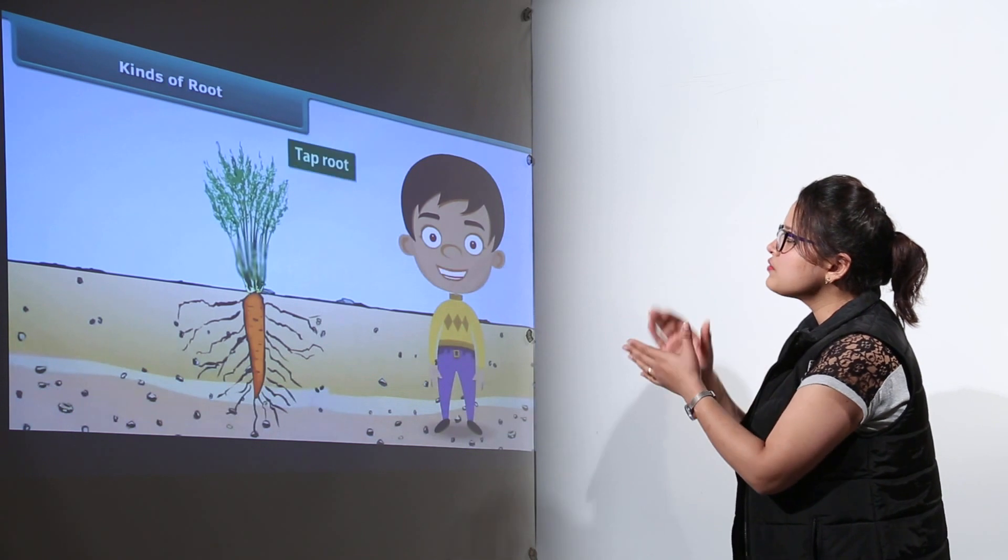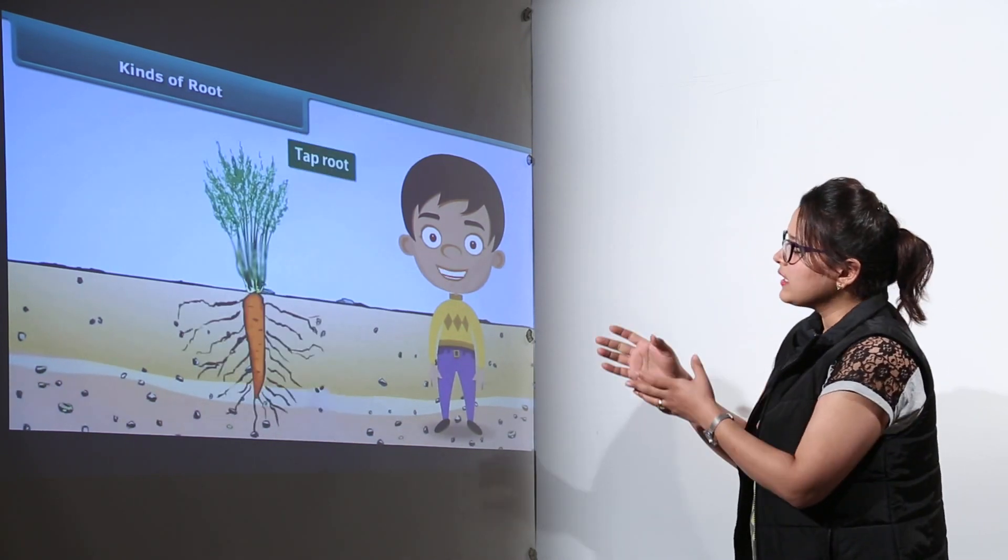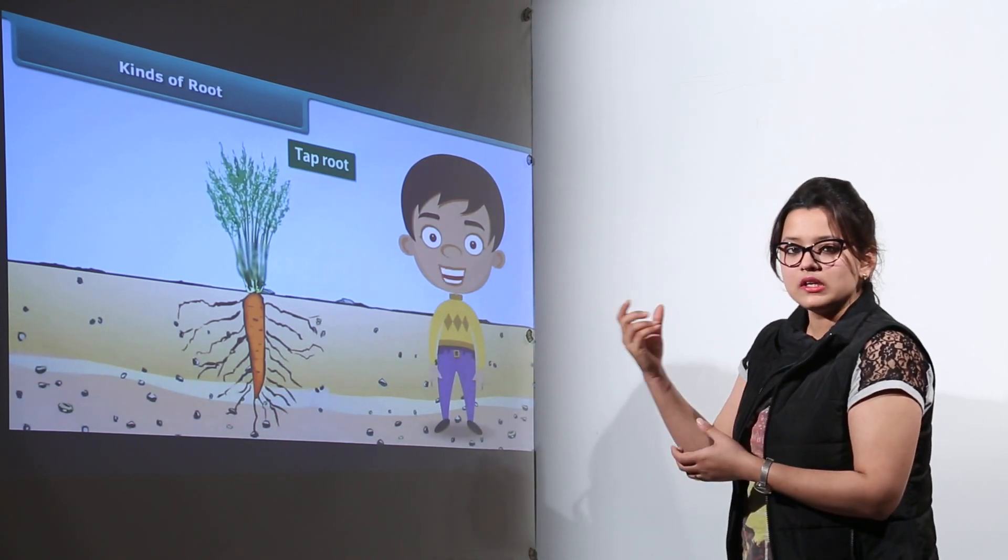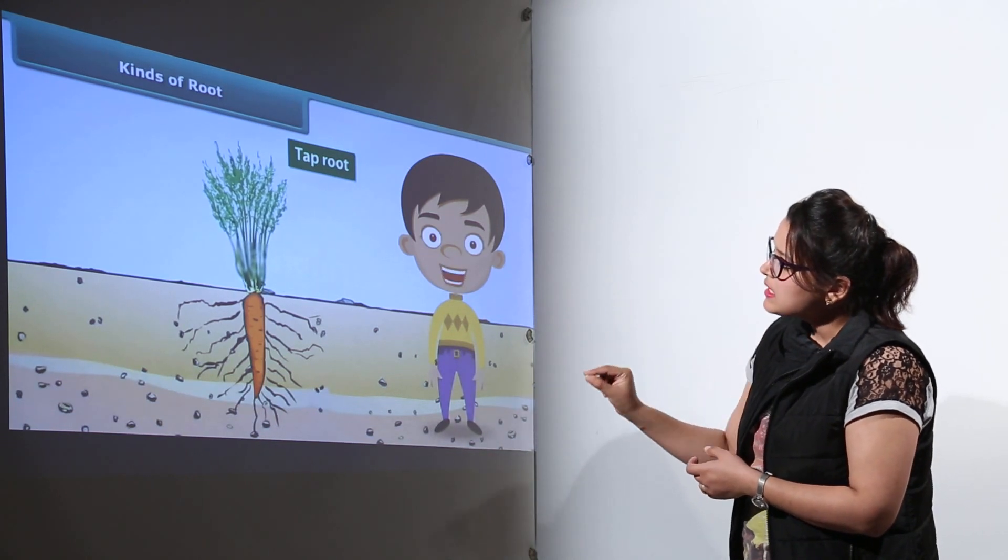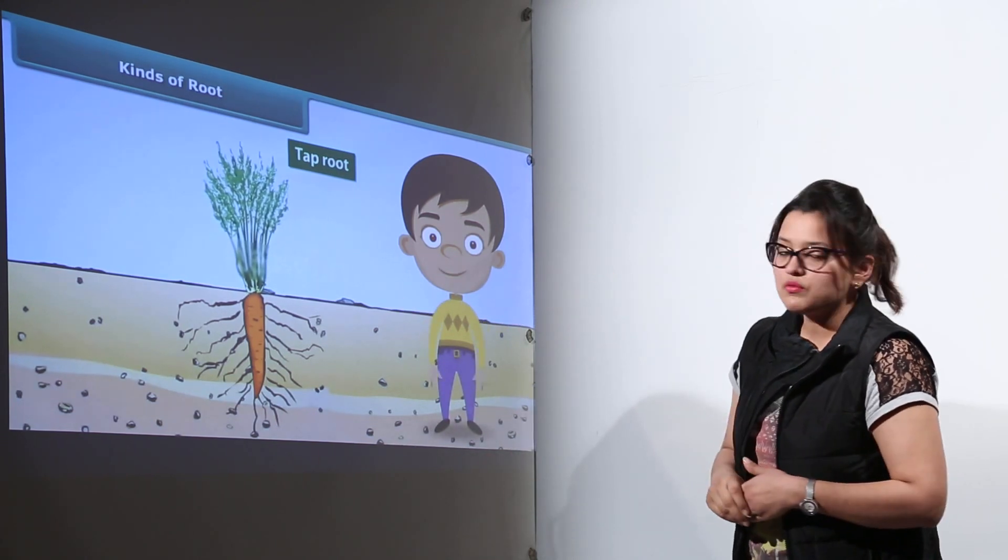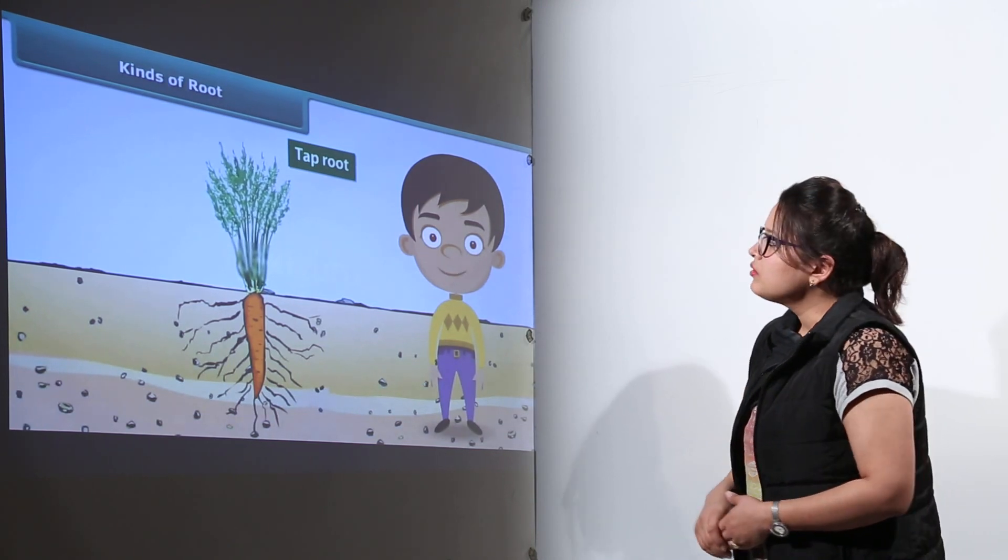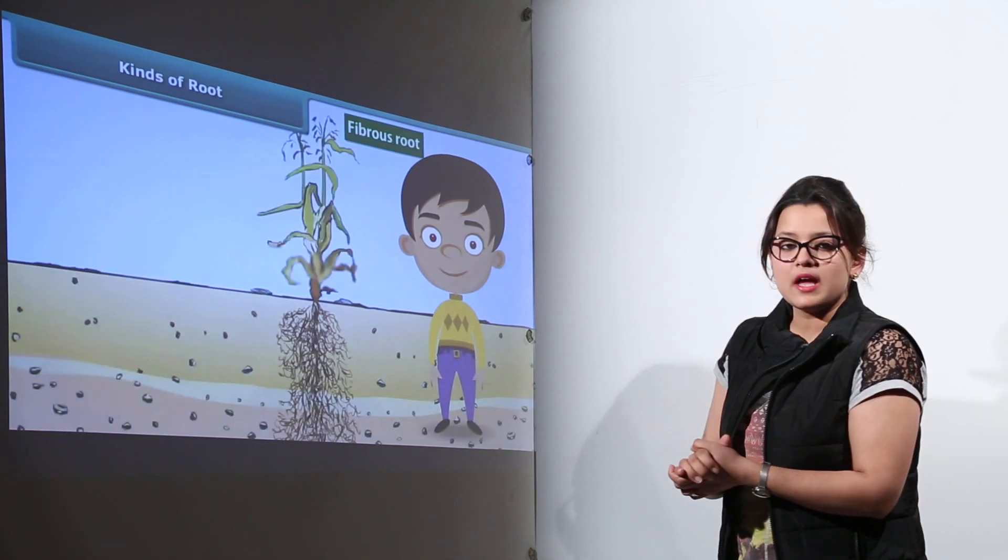Now we have two types of roots: tap roots and fibrous roots. Tap roots have a long, large root and smaller side roots that are visible, known as lateral roots. Examples are radish and carrot plants.